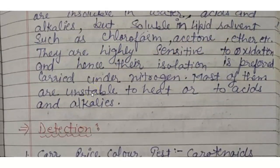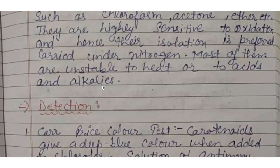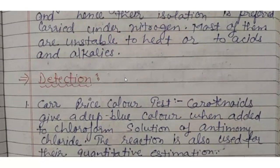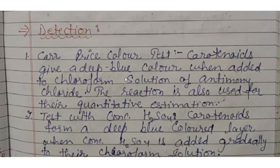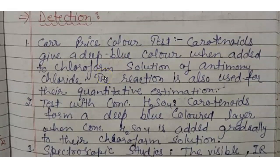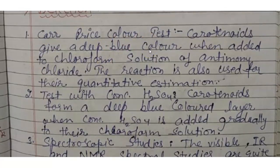Carotenoids are insoluble in water, acids, and alkalis, but soluble in lipid solvents such as chloroform, acetone, and ether. They are highly sensitive to oxidation, and hence their isolation is carried out under nitrogen. Most of them are unstable to heat, acid, and alkalis.